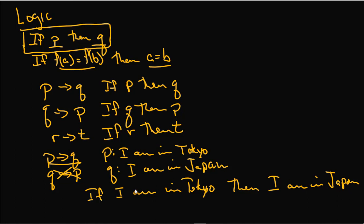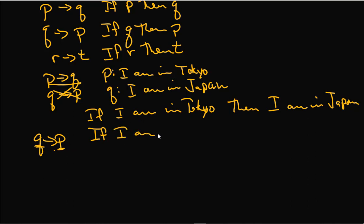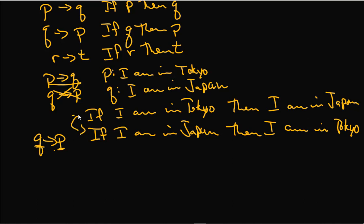If I am in Tokyo, then I am in Japan. That's true — it has to be true. Now what does Q arrow P mean? That's if Q, then P — so: if I am in Japan, then I am in Tokyo. Are these the same? No, they're definitely not the same. One is always true, and the other is not necessarily true. So P arrow Q and Q arrow P are not the same — they're basically different statements.